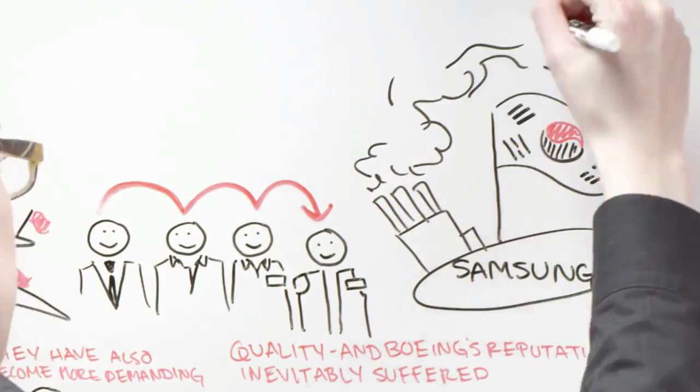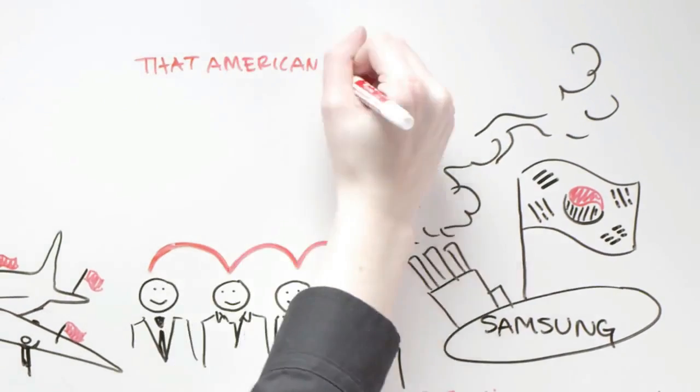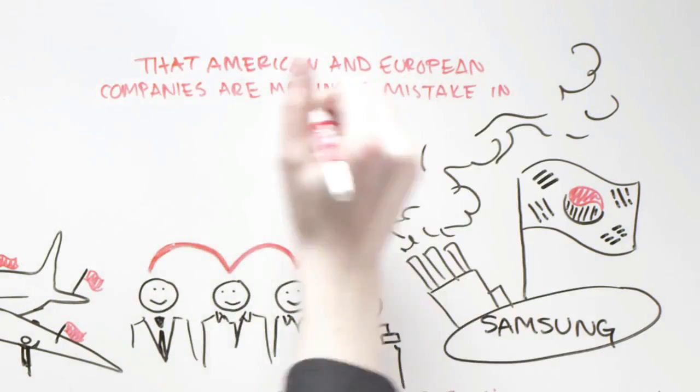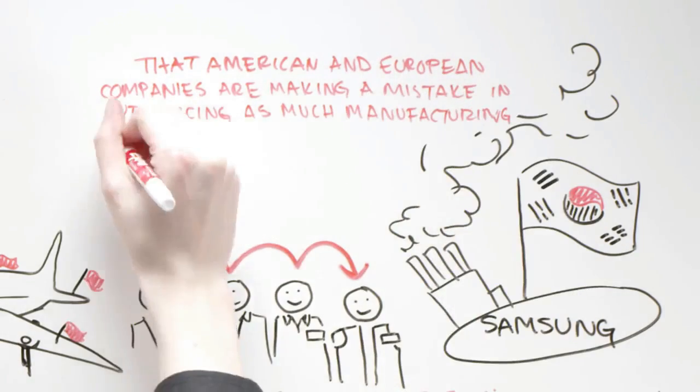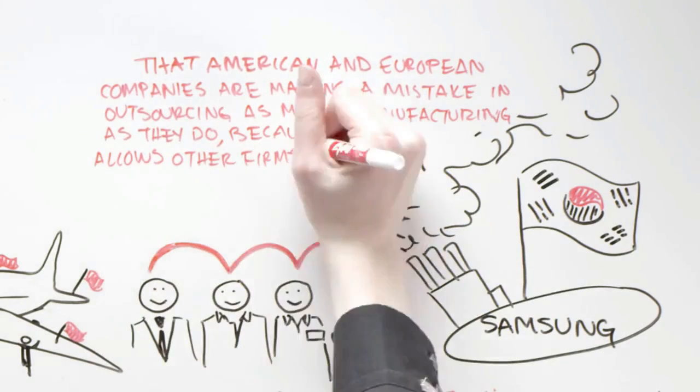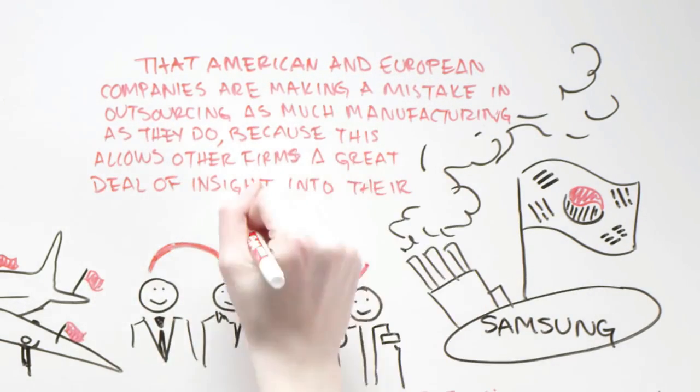South Korean business leaders rarely outsource production and believe that American and European companies are making a mistake in outsourcing as much manufacturing as they do, because this allows other firms a great deal of insight into their processes.